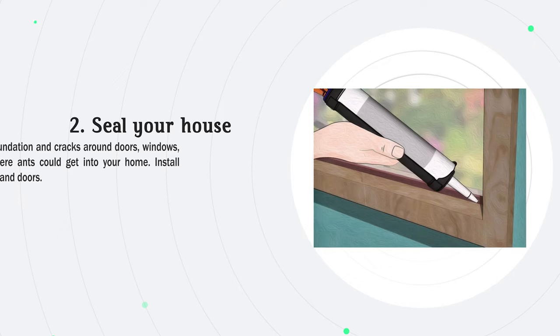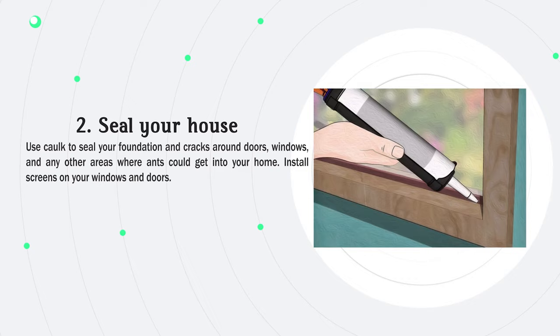Step 2: Seal your house. Use caulk to seal your foundation and cracks around doors, windows, and any other areas where ants could get into your home. Install screens on your windows and doors.